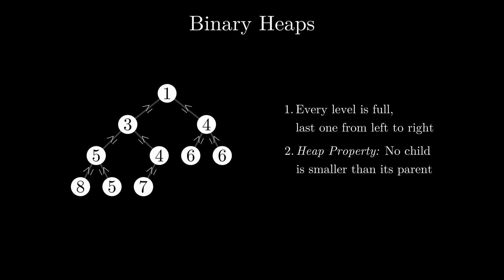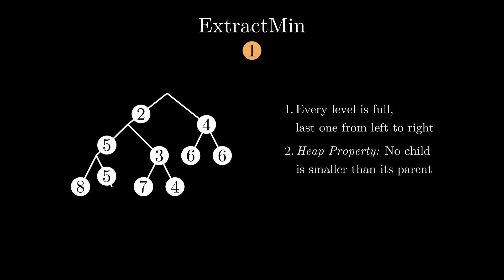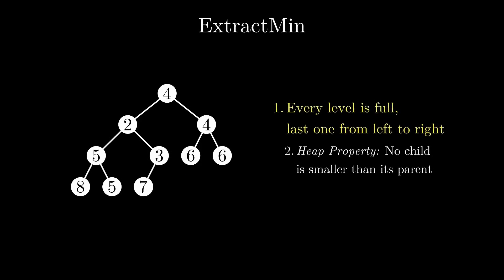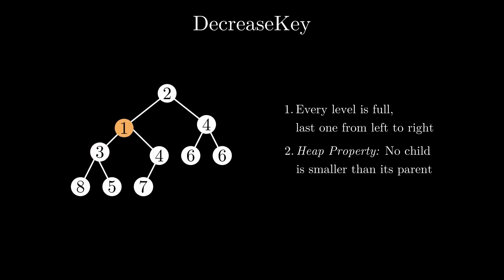This allows us to easily access the minimum element, which is exactly what we want from a priority queue. To insert a new element, there is only one valid position that doesn't violate property 1. But we still violate property 2 if the new element is smaller than its parent. We can fix this by bubbling up the new element until property 2 is restored. For ExtractMin, we swap the root with the rightmost element of the last level, delete it while maintaining property 1, then fix property 2 by repeatedly swapping the new root with the smaller of its children. For DecreaseKey, we can apply the same bubble-up approach, maintaining a hash table with pointers to each element's position in the tree.